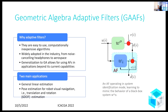Let me explain what an adaptive filter is. You can think of it as one neuron in a neural network — an instance of linear estimation that learns on the spot and does inference on the spot as well. Think of a FIR filter: you adapt those coefficients to perform linear estimation in real time. They are very easy to use, computationally inexpensive, and found in many devices today like noise-cancelling headphones and aerospace guidance systems. Unlike Kalman filters, you do not need to assume a statistical distribution — you just throw data into it and it finds its way.